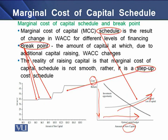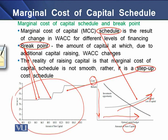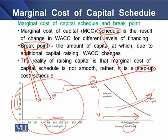Now, what is the break point? A break point is basically the amount of capital at which, due to additional capital issuance, the company's WACC changes. In the left panel you can see the presentation of break points. In this pictorial diagram, we see the company's WACC on one axis and the amount of new capital on the other. Whenever there is a change in capital, there is an upward trend in WACC. The points where WACC changes are known as break points, because these are the points where the WACC changes due to the change in capital structure.